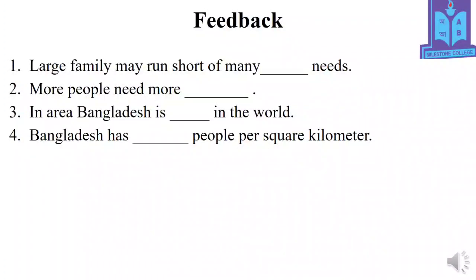Fill in the blanks feedback. Number 1: Large family may run short of many BLANK needs. Very good — the answer is basic needs. Number 2: More people need more BLANK. Very good — the answer is housing.